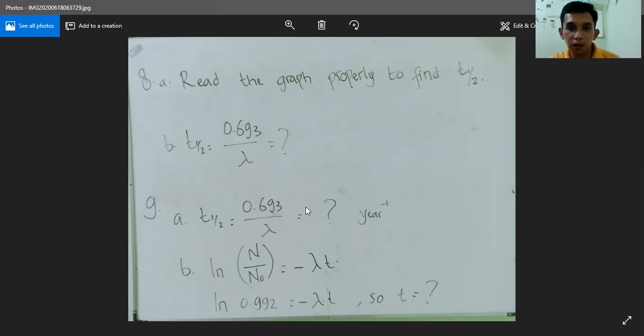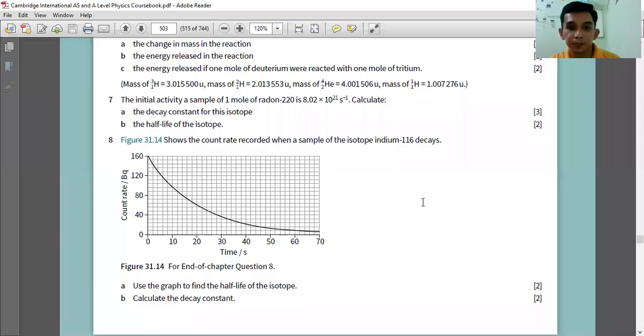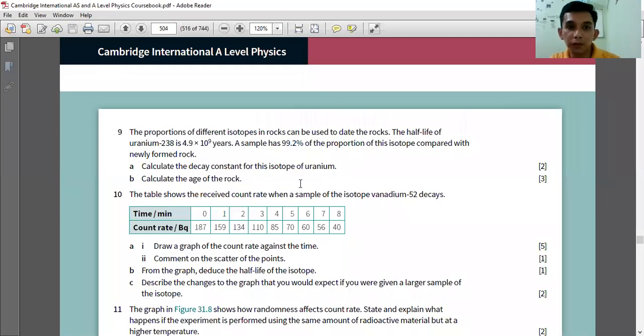And for number nine, the proportions of different isotopes in rocks can be used to date the rocks. The half-life of uranium-238 is 4.9 times 10 to the power of nine years. A sample has 99.2 percent of the proportion of these isotopes compared with a newly formed rock.